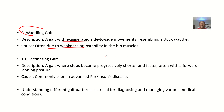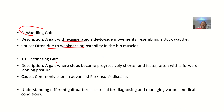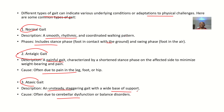Festinating gait — this is a gait where the steps become progressively shorter and faster, often with a forward-leaning posture. It's commonly seen in advanced Parkinson's disease. These are the different gaits — if you understand them and the conditions where you can find them, it will help you in diagnosing and recognizing various medical conditions.